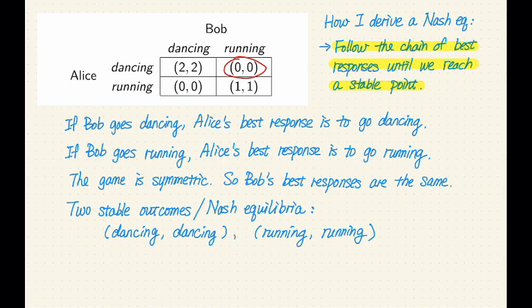So what happens in this case? Let's consider Bob, for example. Now, in this case, we're fixing Alice to be going dancing and consider Bob. Bob's current strategy is running, which gives him a utility of zero. And another strategy for Bob is going dancing and that gives him a utility of two. So clearly dancing is better than running, which means in the current strategy profile, Bob is not playing his best response.